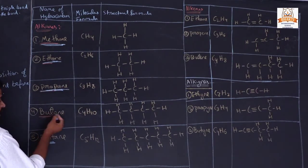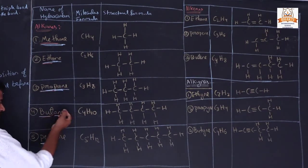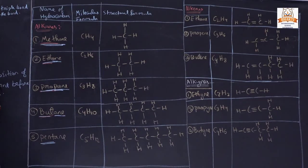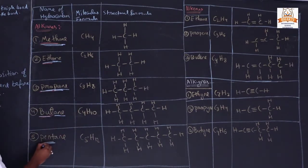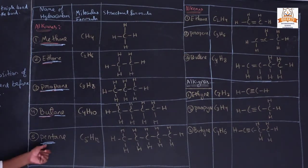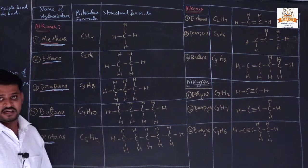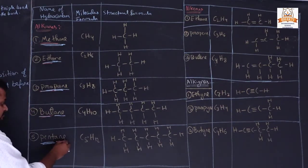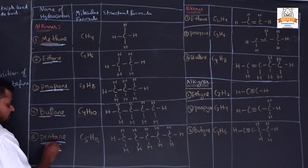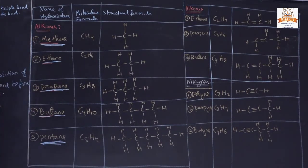Number of carbon atoms is 4, single bond, so it is butane. Number of carbon atoms is 5, carbon atoms bonding with single bond, so it is pentane. All of these are included in alkanes.